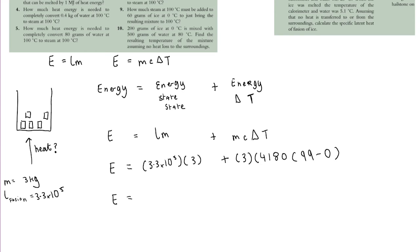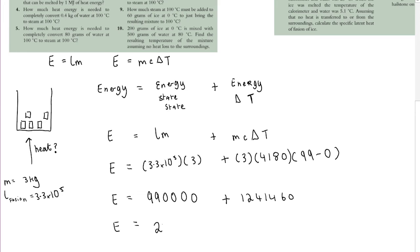Calculating: 3.3 × 10⁵ × 3 = 990,000 J for the change of state. The energy for the temperature change is 3 × 4180 × 99 = 1,241,460 J. Adding these together gives a total energy required of 2,231,460 joules. You must carefully consider whether there's a change in temperature, a change in state, or both.